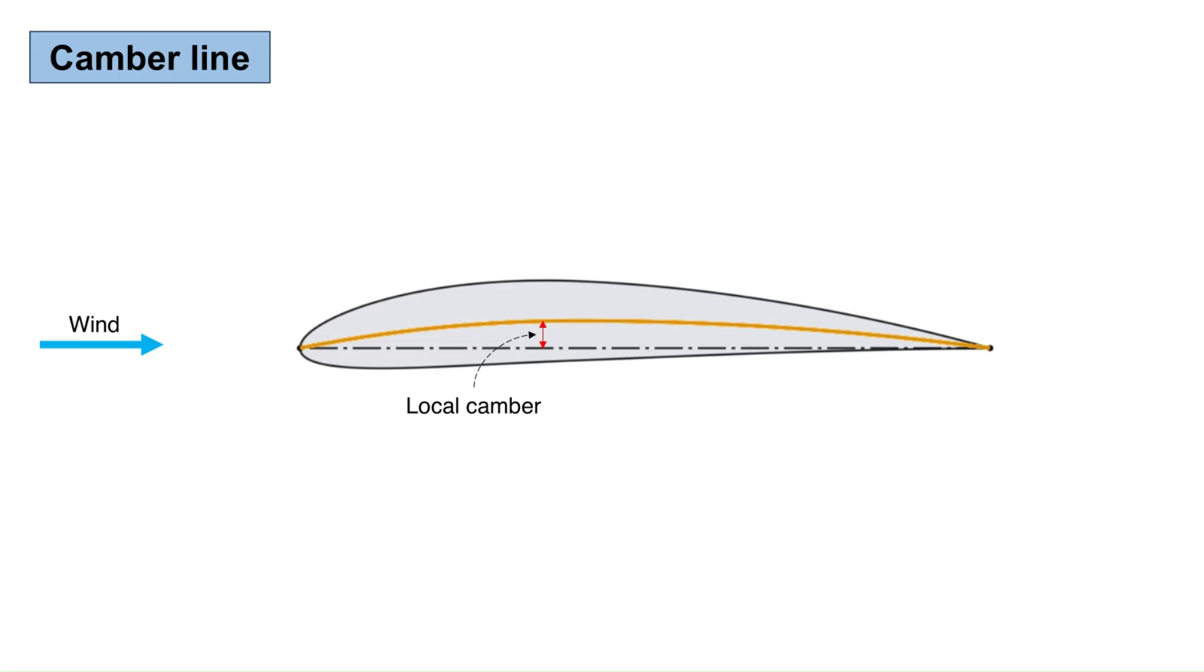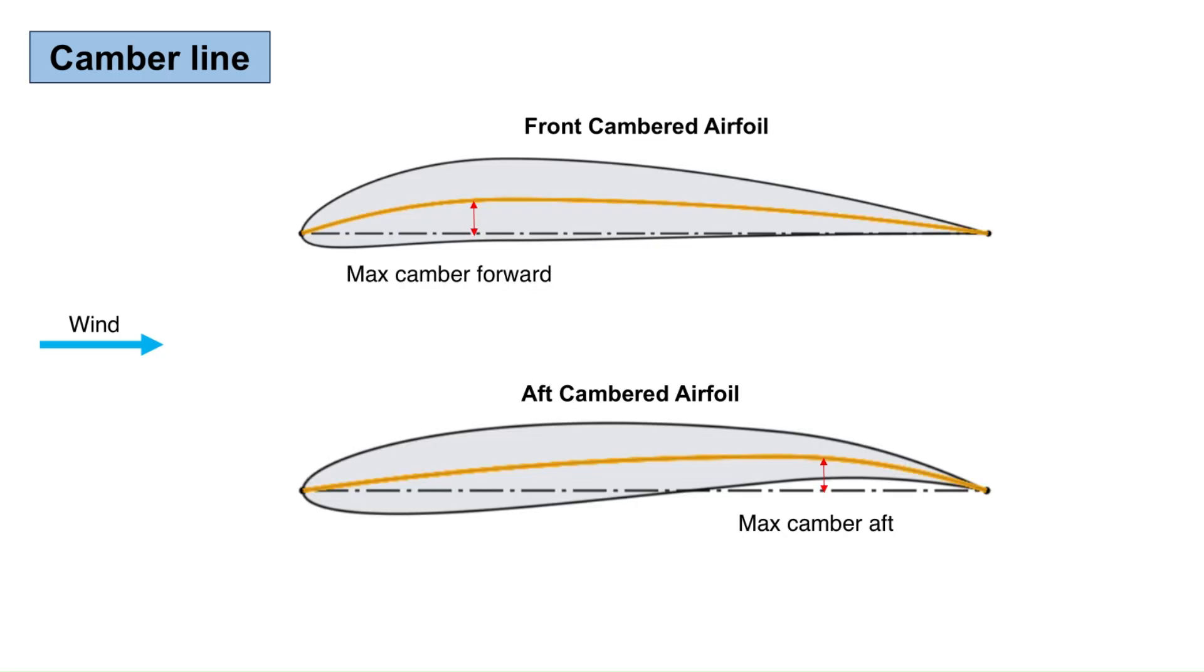The distance between the camber line and the chord line is referred to as the local camber. If the airfoil has its maximum local camber in the front portion, it is called a front or nose cambered airfoil. If the airfoil has its maximum local camber in the aft portion, then it is called an aft cambered airfoil. The distribution of max local camber has a great effect on the pitching moment of the airfoil as well as on the lift and drag, which we will discuss in the next videos.